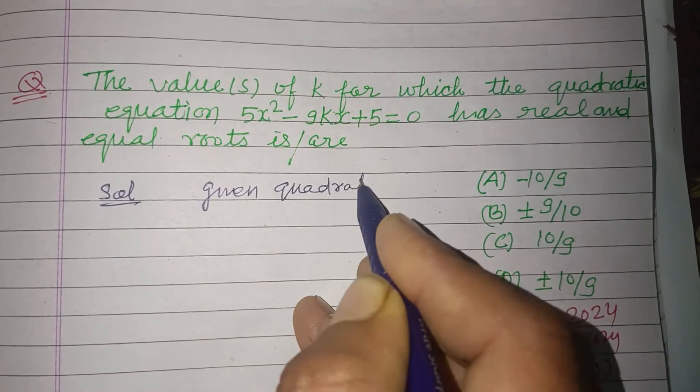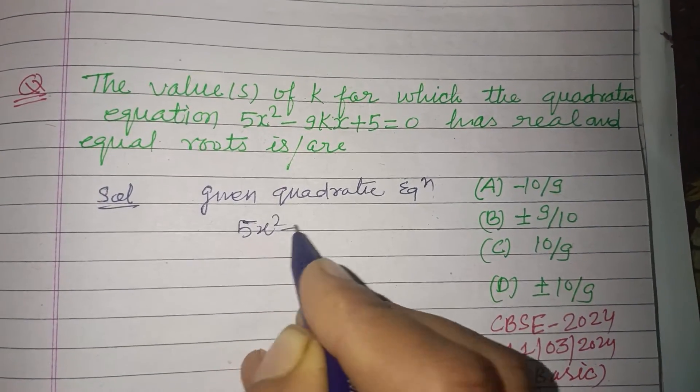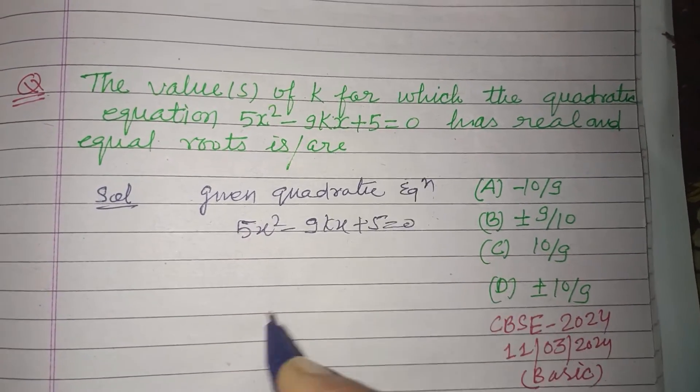Quadratic equation is 5x² - 9kx + 5 = 0.